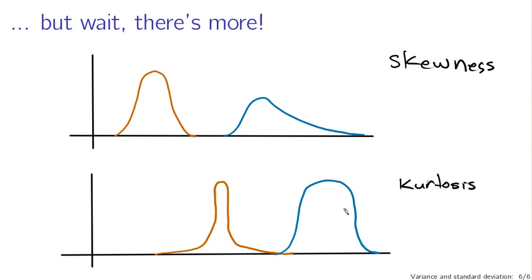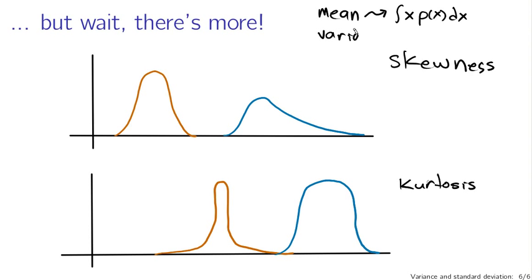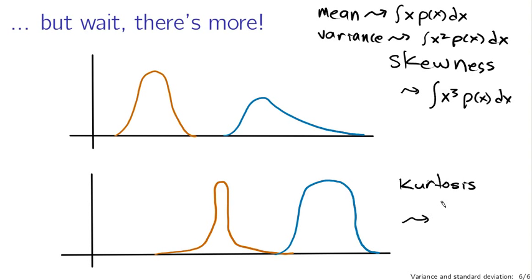Kurtosis has to do with the relative weights of things near the peak versus things in the tails. Mathematically: the mean was related to the integral of x rho of x dx; the variance to x squared rho of x dx; the skewness to x cubed rho of x dx; and the kurtosis to x to the fourth rho of x dx. These are common ways of measuring skewness and kurtosis, though not exact formulas.